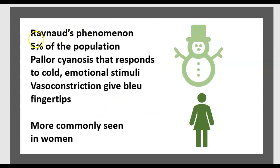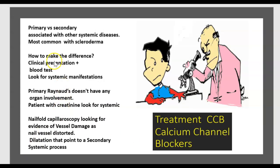What about Raynaud phenomenon or Raynaud syndrome? It can affect over 5% of the normal population. It's characterized by pallor and cyanosis that responds to cold and emotional stimuli. There is a vasoconstriction that gives blue finger tips. It's more commonly seen in women. Primary versus secondary: secondary is associated with other systemic diseases, most commonly scleroderma.